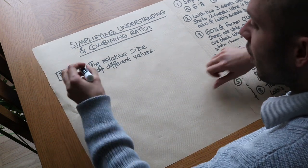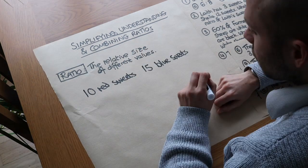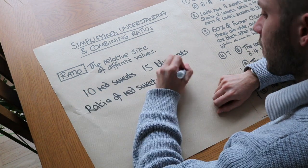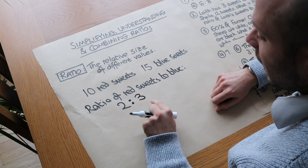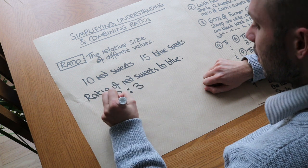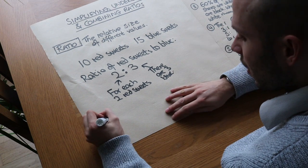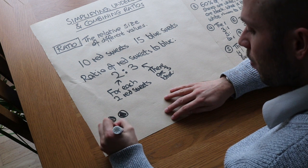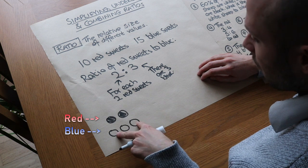Let's just say that I had 10 red sweets and 15 blue sweets. Then I could say that the ratio of red sweets to blue sweets is 2 to 3. What I mean by that is that for each two red sweets I have, I have three blue sweets.